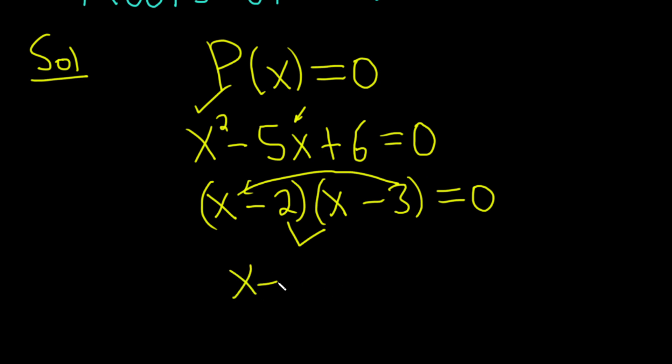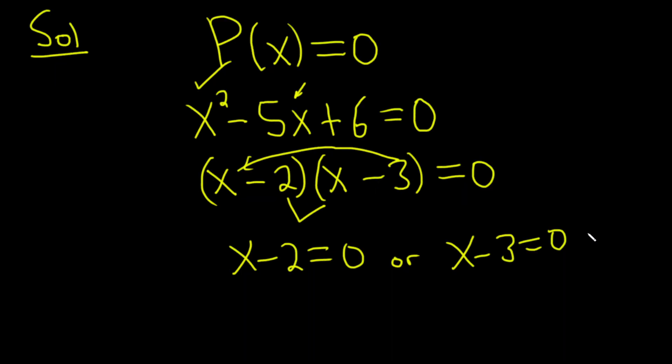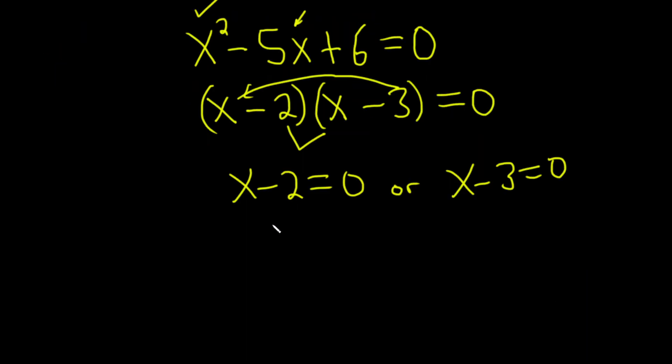We have a product equal to 0, so we set each factor equal to 0. And then here we have two different values for x.